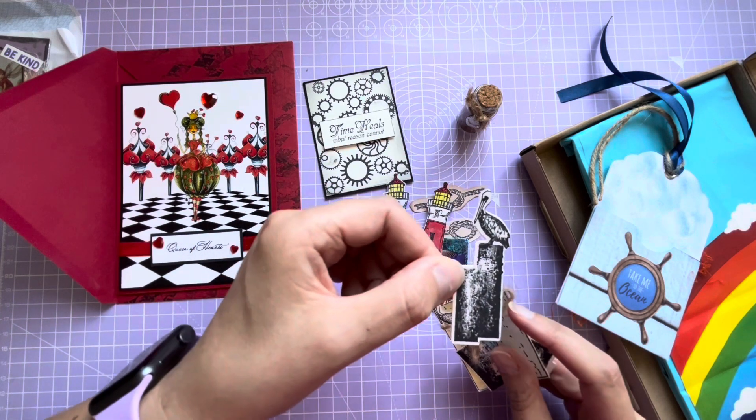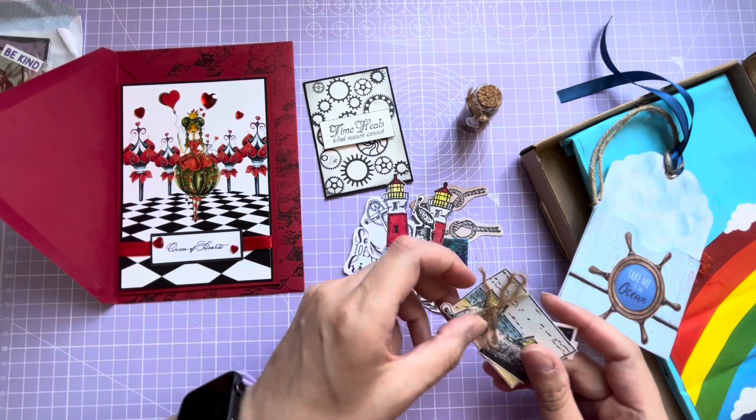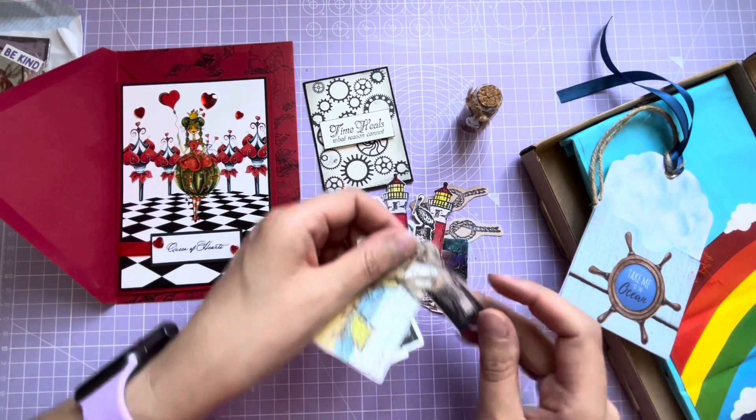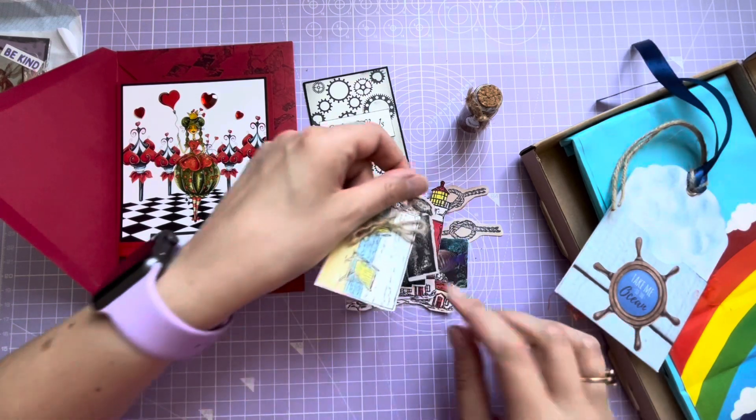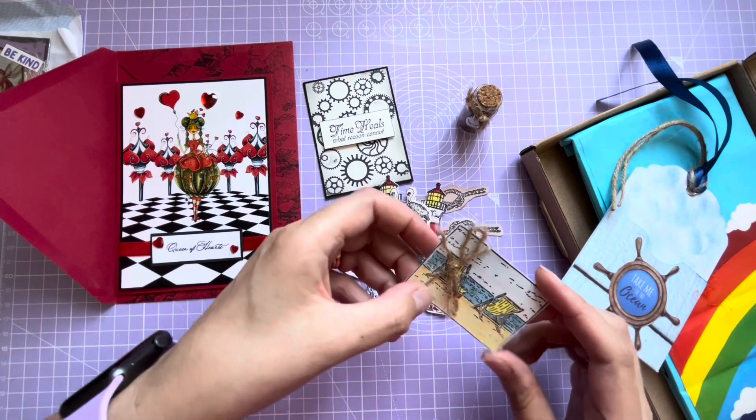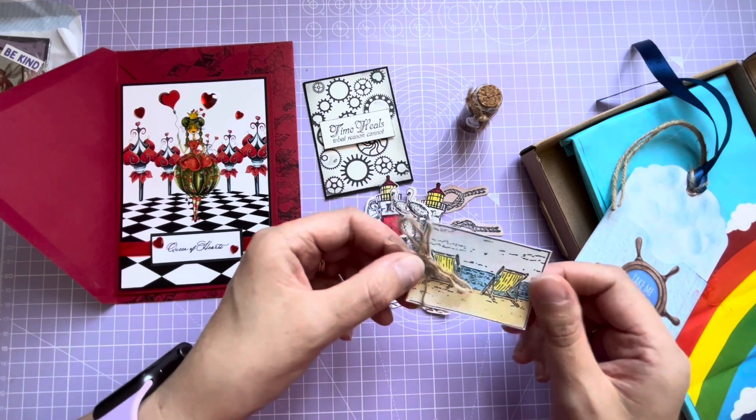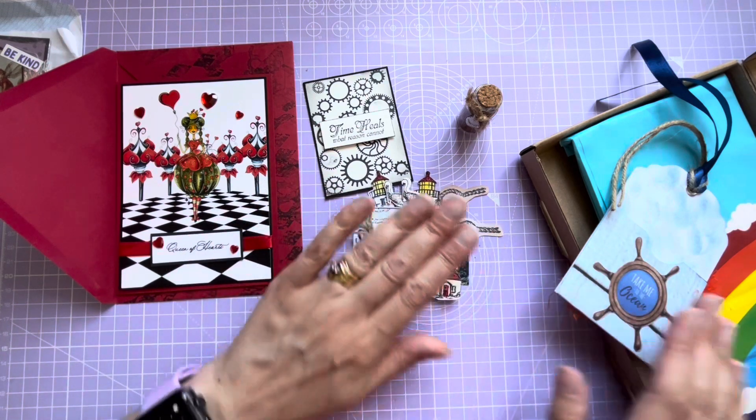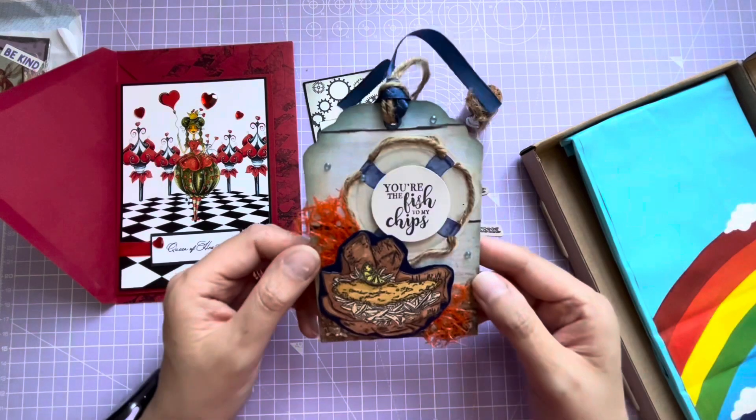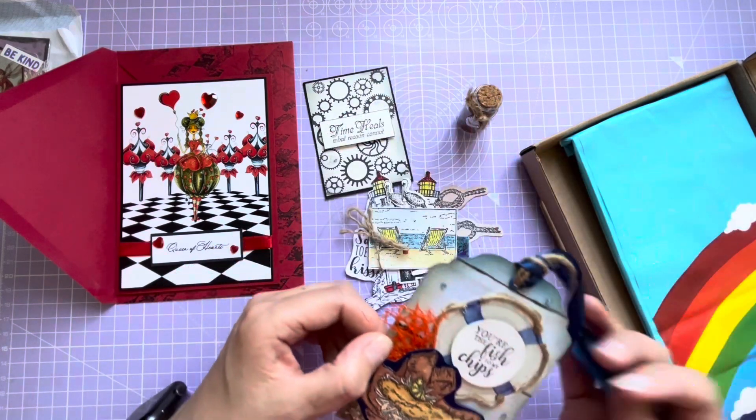And we've got a little stamp of, is it a pelican? There's two of those, three of those. And a little image with the deck chairs on the beach. They're beautiful, I love using those. Thank you so much!